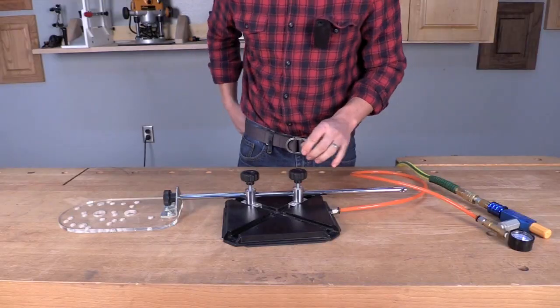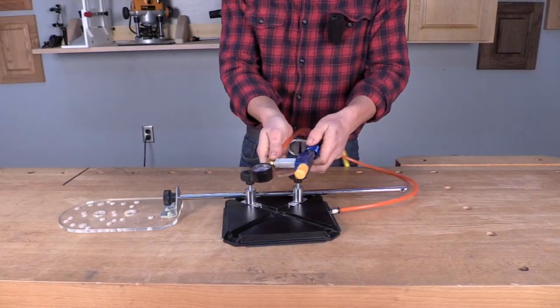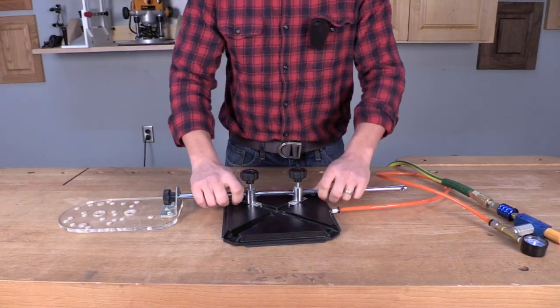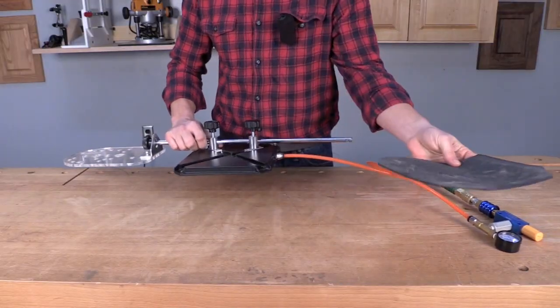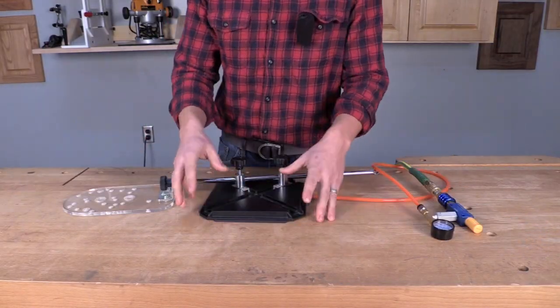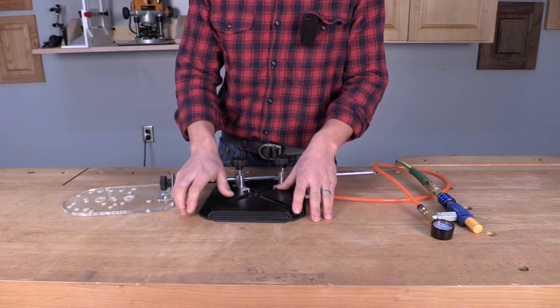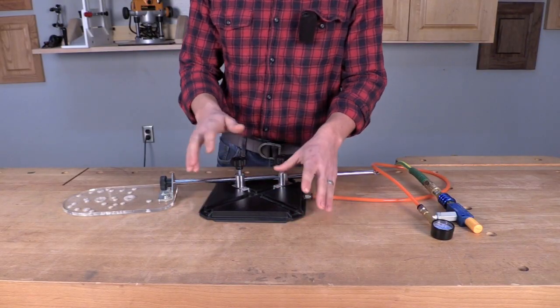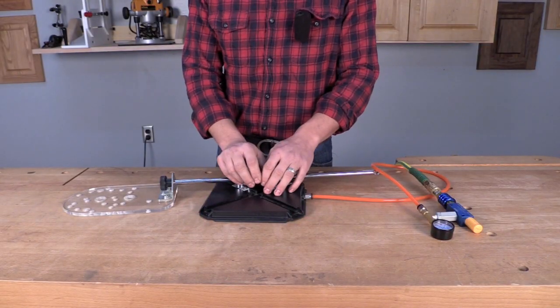When I'm all done, I simply turn the Venturi switch off and I can remove my oval and circle cutter from my project and I have no marks on my work piece itself. I no longer have to worry about having to fill little screw holes or pin holes from attaching the base of my oval and circle cutter.